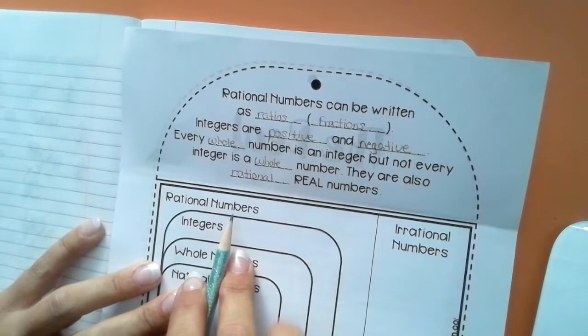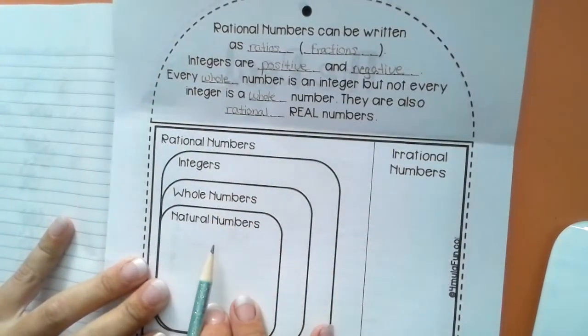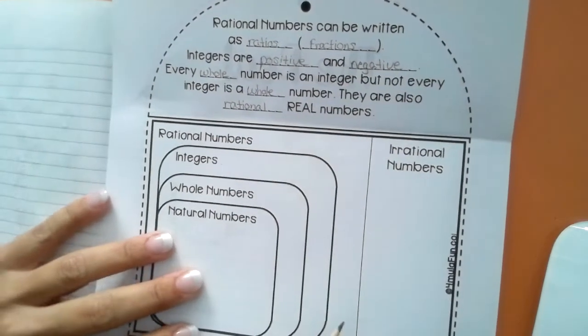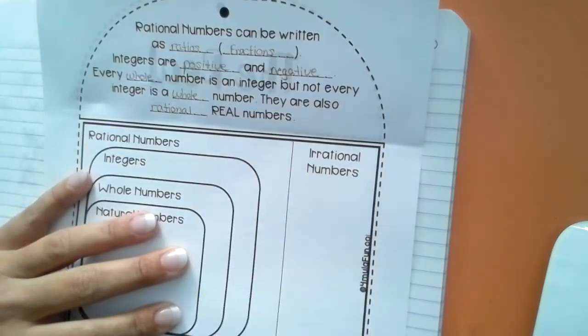So here we have a chart with all of our rational numbers, integers and whole numbers and natural numbers. Irrational numbers are those numbers that they don't meet certain conditions.